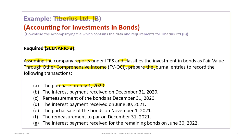The transactions include: the purchase on July 1, 2020; the interest payment received at December 31, 2020; the remeasurement of the bonds to market value at December 31, 2020; the subsequent interest payment to be received on June 30, 2021; the partial sale of the bonds on November 1, 2021; a subsequent remeasurement to par on December 31, 2021; and finally the interest payment for the remaining bonds on June 30, 2022 — which also requires a payment of interest on December 31, 2021. So this is a pretty comprehensive example.